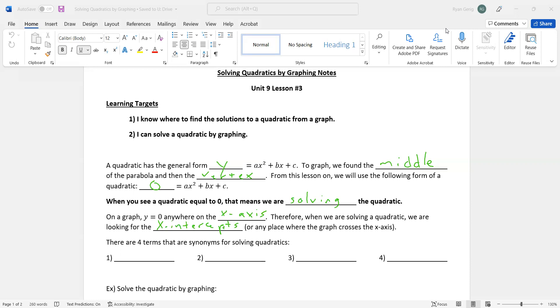So the x-intercepts is another word for the solution. There's four terms that all mean the same thing when it comes to solving quadratics. Solutions and x-intercepts mean the same thing. Those are the two I use the most, but there are two other words that you will need to know: roots and zeros. All of those things mean the same thing. So when I ask you to find the solutions, I'm also asking you to find the x-intercepts, the roots, and the zeros. We're going to jump right in and do a problem.